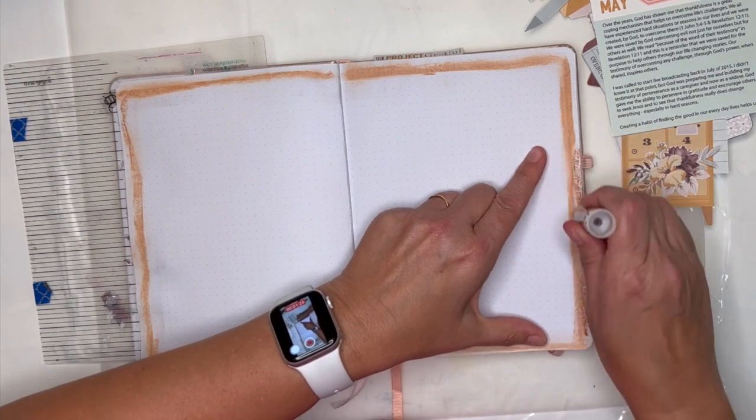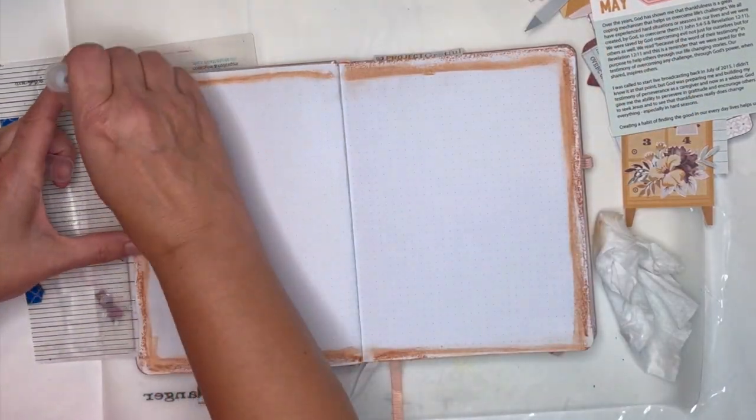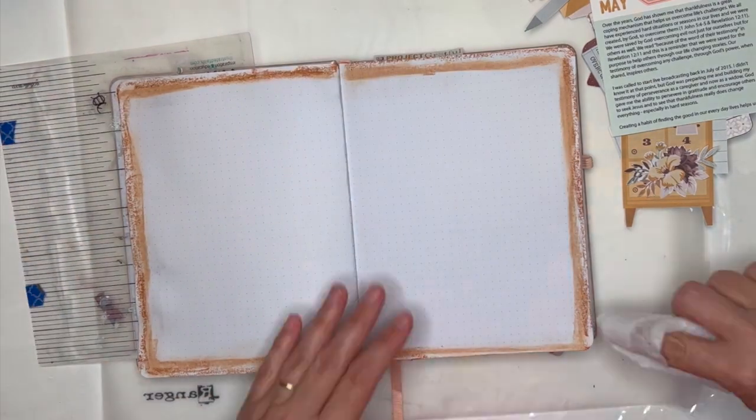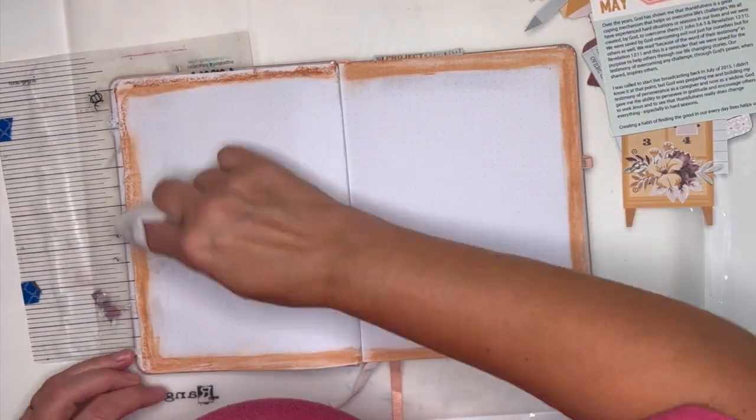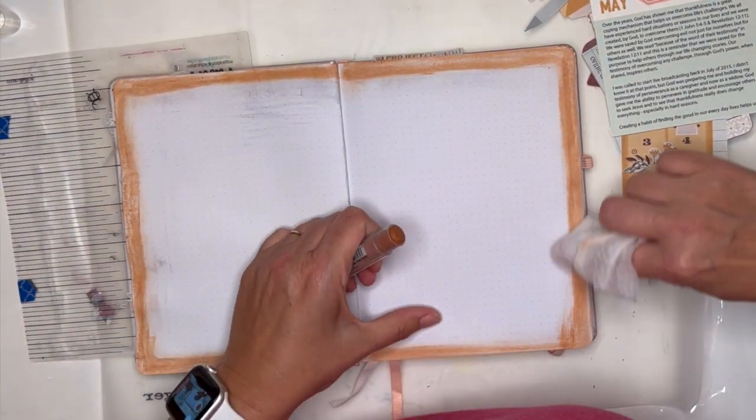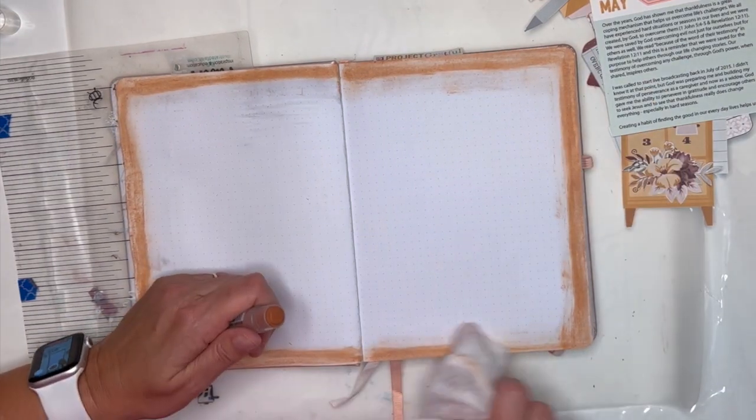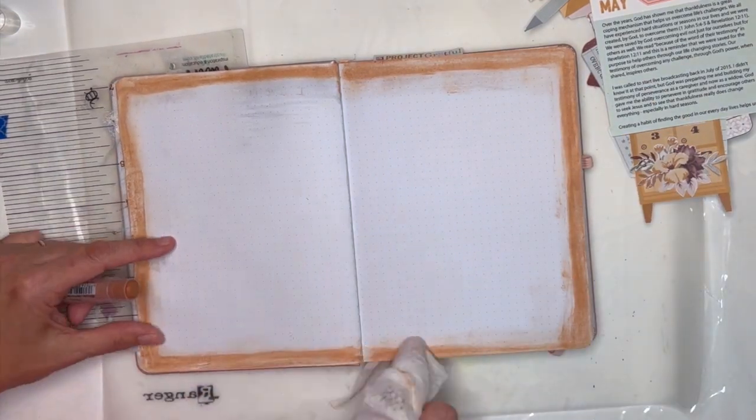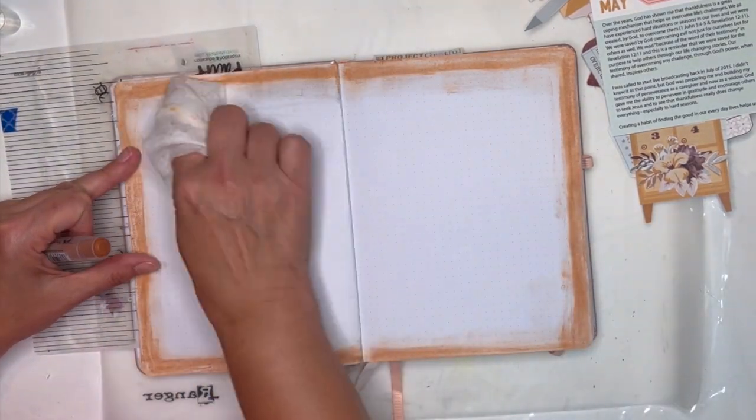I'm using a wet baby wipe to blend it in, to smear it and rub it. However, this baby wipe was not quite wet enough. Adding a little bit more of that color and then I get a wetter baby wipe and you can see the difference in how it blends much better.